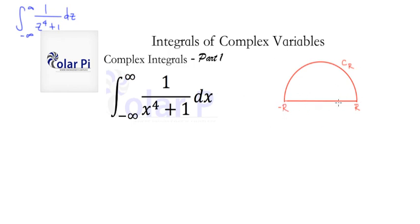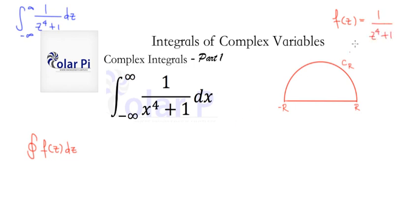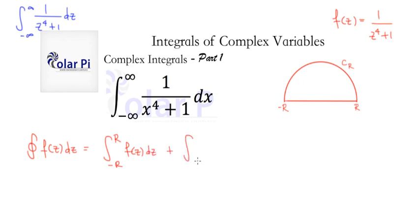We use the line segment from negative r to r and a semicircular arc of radius r, which we call Cᵣ. Then we can have a closed contour that will allow us to use the residue theorem. So we write the integral over this closed contour of f(z) — by f(z) I mean 1 over z to the fourth plus 1 — is equal to the integral from negative r to r of f(z) plus the integral over the semicircular arc Cᵣ of f(z). That's true: the closed contour is first the line segment and then the semicircular arc.